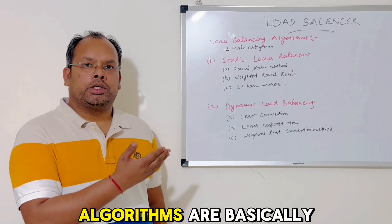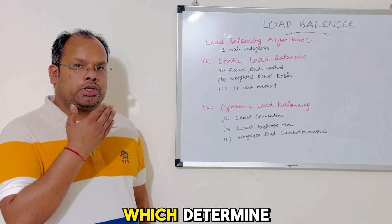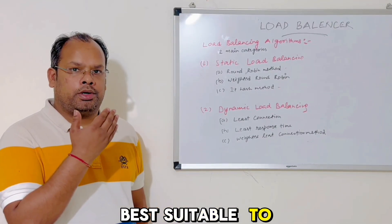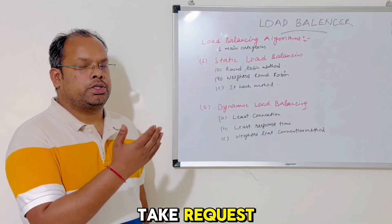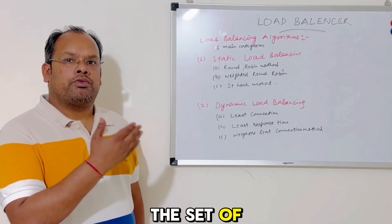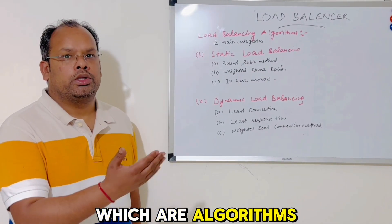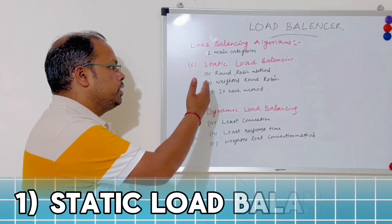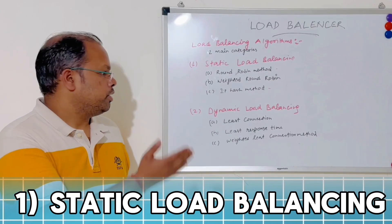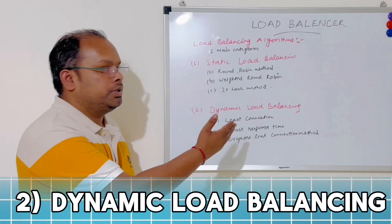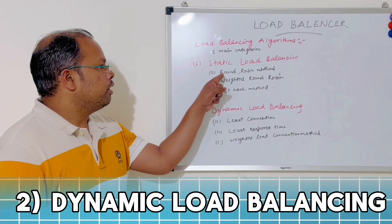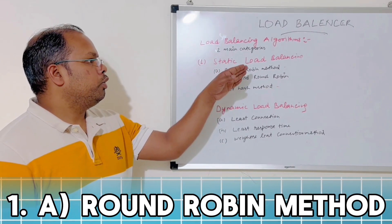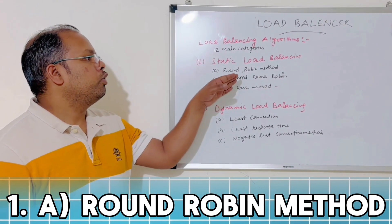Now let's discuss load balancing algorithms. Load balancing algorithms determine which server is best suited to take a request — they are a set of rules. There are two main categories: static load balancing and dynamic load balancing. In static load balancing, the first method is round robin.